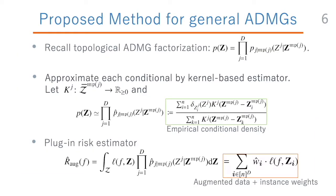To derive the method for more general ADMGs, we take advantage of the topological ADMG factorization. First, we rewrite the joint distribution by the ADMG factorization. It describes the joint density as a product of d different conditional densities. Then, we approximate each conditional density in this factorization by a kernel-based empirical conditional density, as in the middle equation.